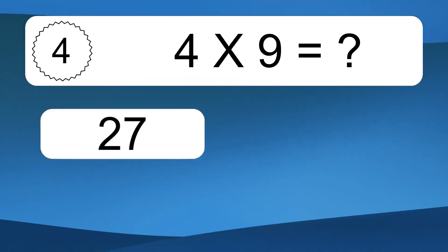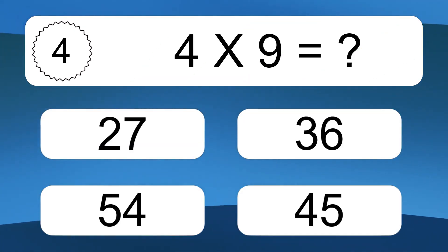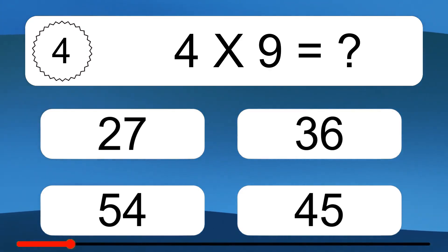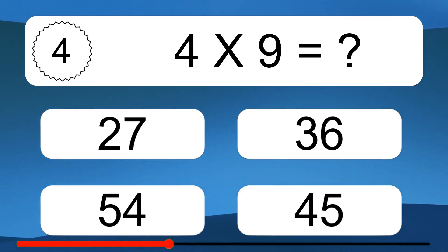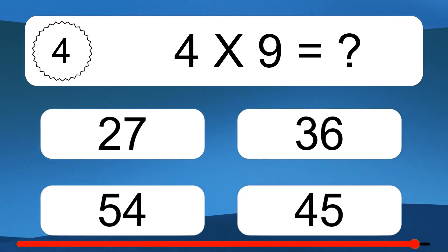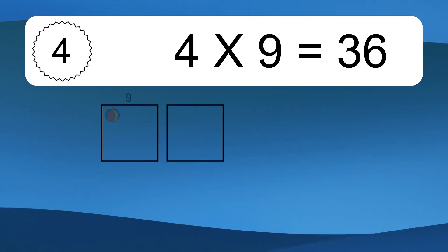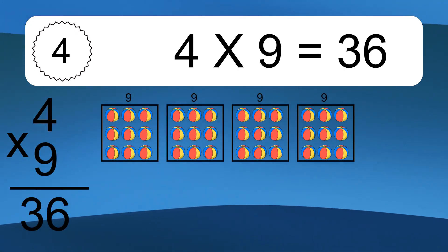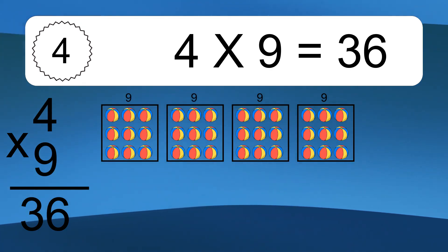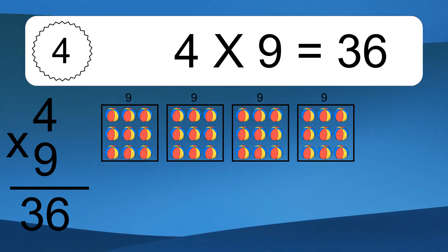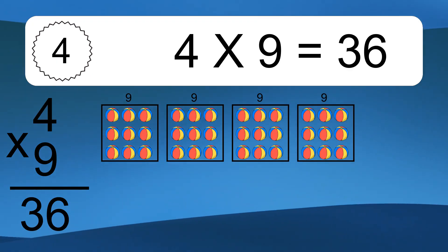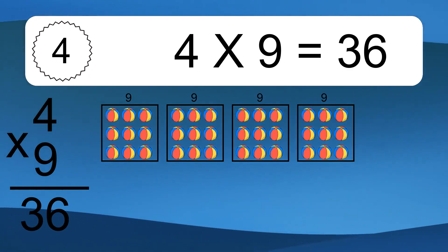4 times 9 equals what? We have 4 boxes, and each box has 9 colorful balls inside. If you count all the balls in all the boxes together, you will have 4 times 9 balls. This equals 36 balls.